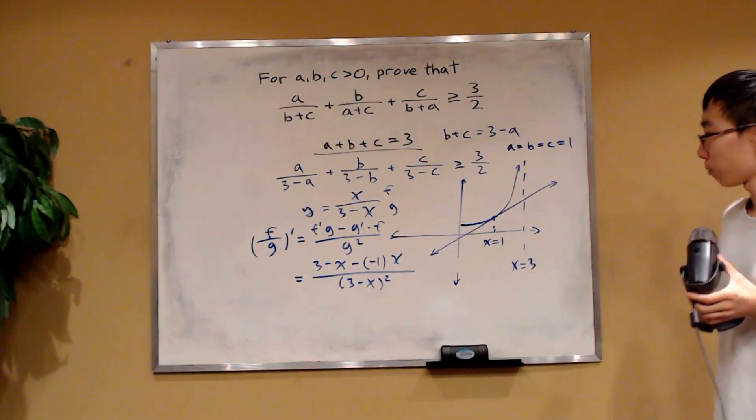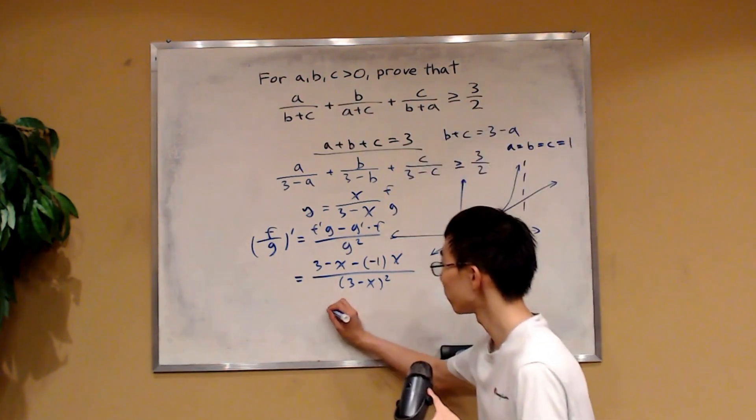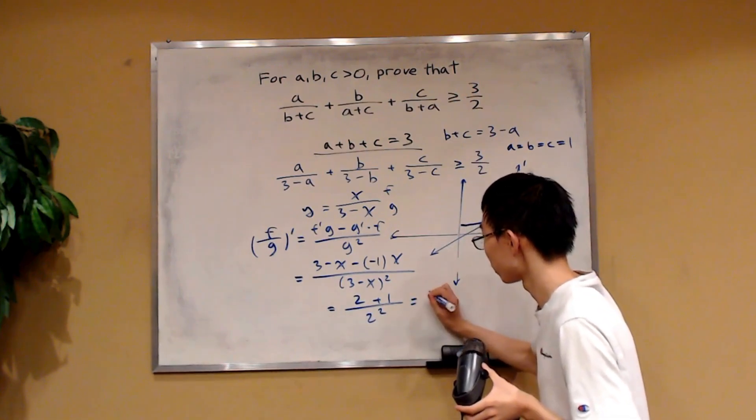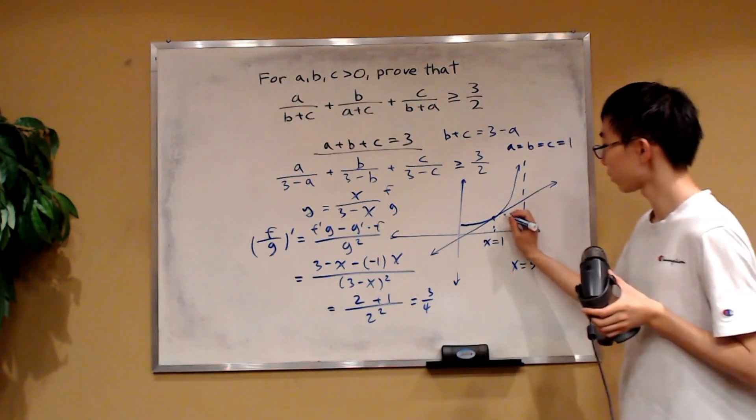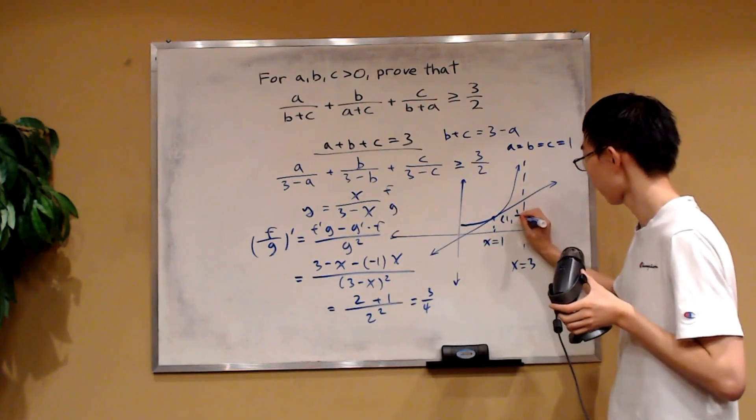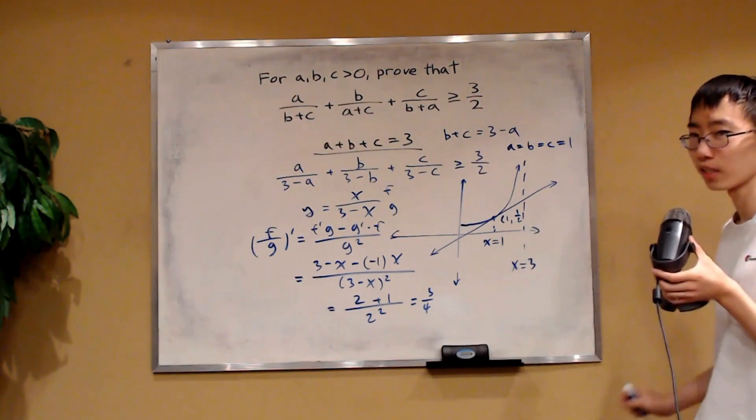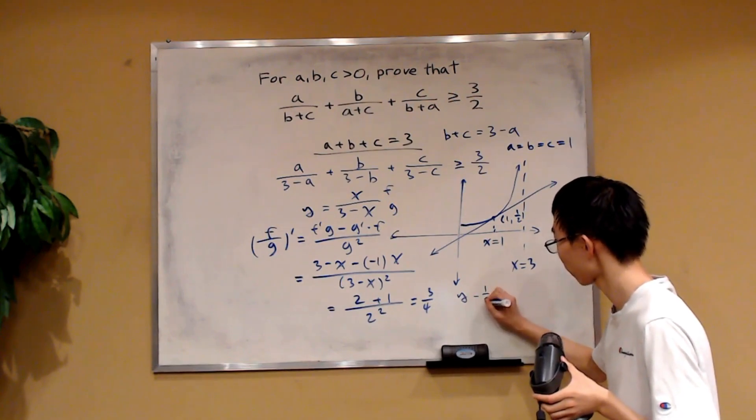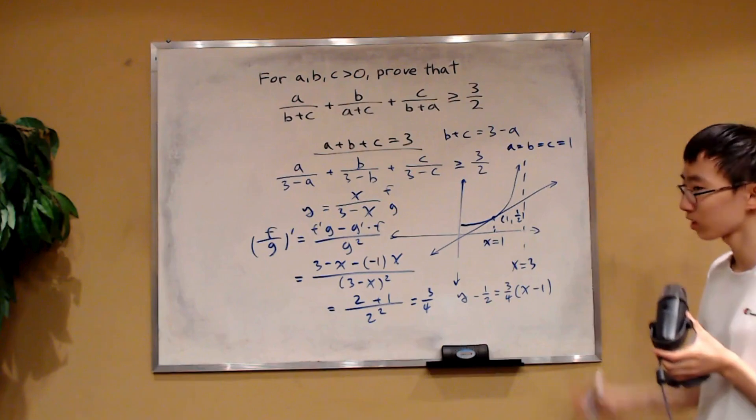Now, we want to find the slope at x is equal to 1. So we can just plug in x to be 1 for this one. This will become 2 and then plus 1 over 2 squared. And this becomes 3 over 4. So the slope is just 3 over 4. And furthermore, we know that this line passes through the point 1 - this function at x is equal to 1, that's 1 half. So it passes through this point. So therefore, the slope and the point, we get the equation. It is equal to y minus 1 half is equal to 3 over 4 times x and then minus 1. And that's its equation. We can, of course, rearrange this.